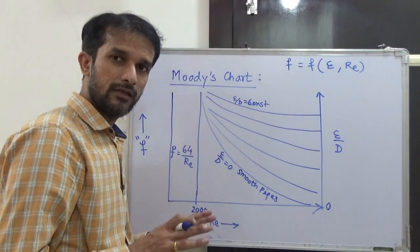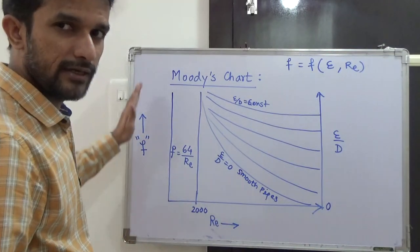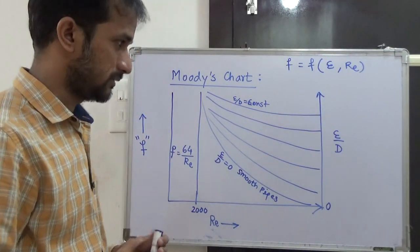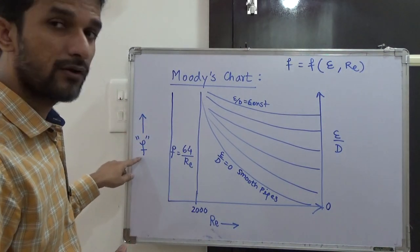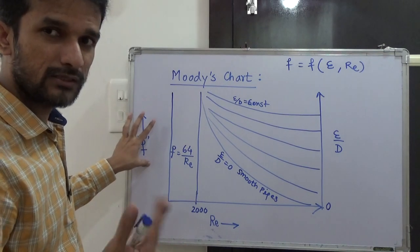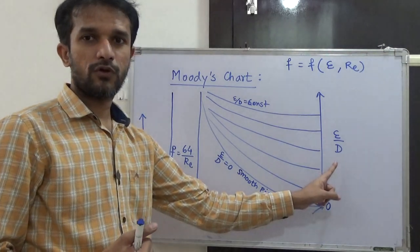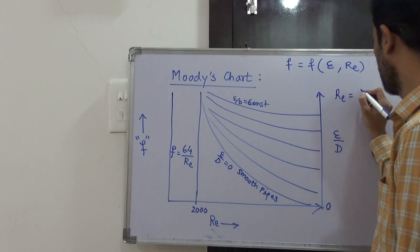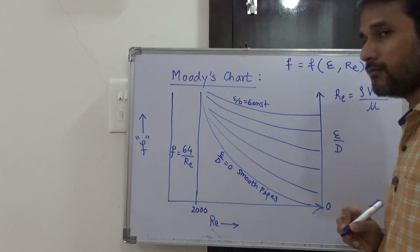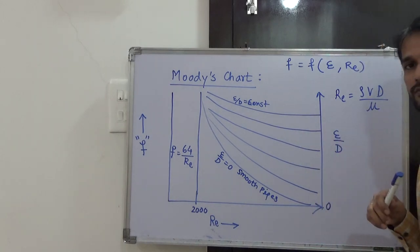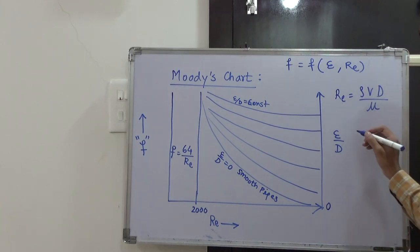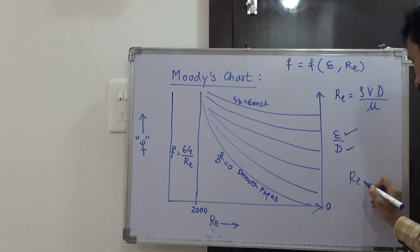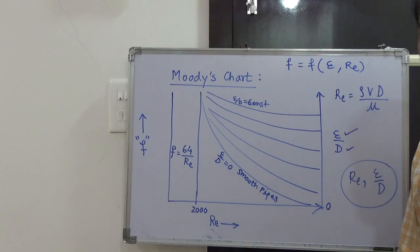To use the Moody chart to find the friction factor, you need two inputs: the Reynolds number and the epsilon/D value. If not directly given, compute Reynolds number using the formula Re = ρVD/μ, where ρ is density, V is velocity, D is diameter, and μ is viscosity. You must also have the epsilon value and the diameter to compute the relative roughness, ensuring both are in the same units.